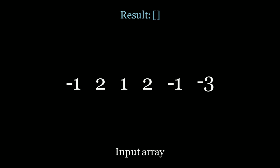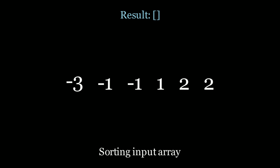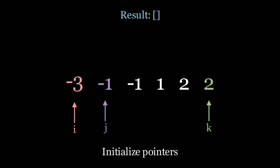Since we're already trying to beat n cubed, we can sort the array effectively for free — sorting is n log n, which is much better than n cubed. So let's sort the array and see if we can be clever about how we iterate. Step one: sort the array. We get negative three, negative one, negative one, one, two, two. Now we initialize the same i, j, k pointers, but the key difference is we initialize k to the end of the list instead of one after j. This is the big conceptual understanding of this problem.